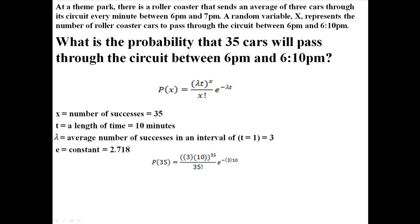So, what I've done here is I've just taken the x, t, lambda, and e and put them into the equation. And now, I'm going to simplify and further simplify all the way down until I get the answer. We find out that the probability that 35 cars will pass between 6 p.m. and 6:10 p.m. is about 5%.